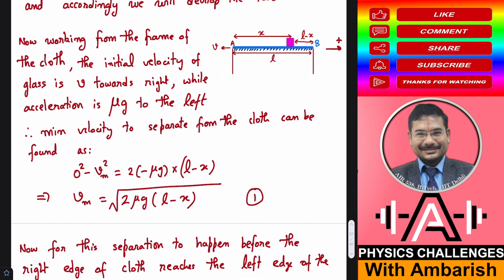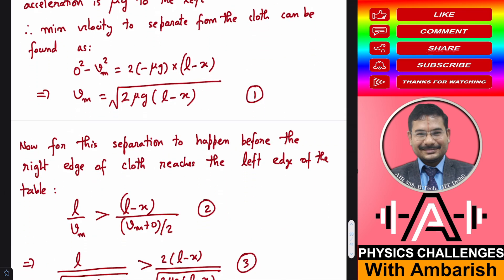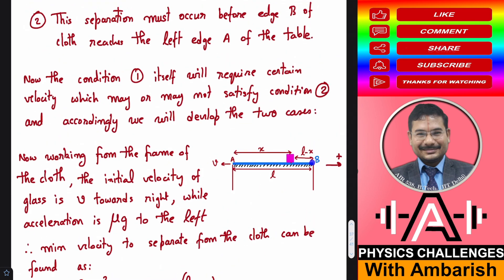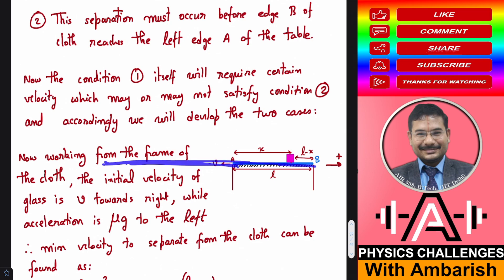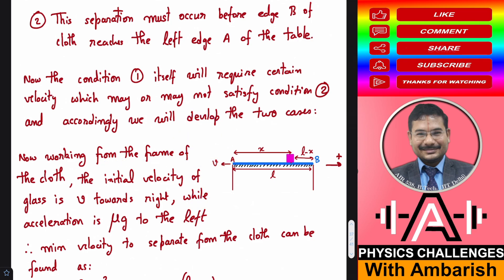If the velocity is less than vm, the glass will somewhere become stationary with respect to the cloth, then static friction takes over and the glass moves along with the cloth. Now, for this separation to happen before the right edge B of the cloth reaches the left edge A of the table, the time taken must satisfy a constraint. Otherwise, the separation would occur only in a mathematical extension of the table region, meaning the glass would fall.